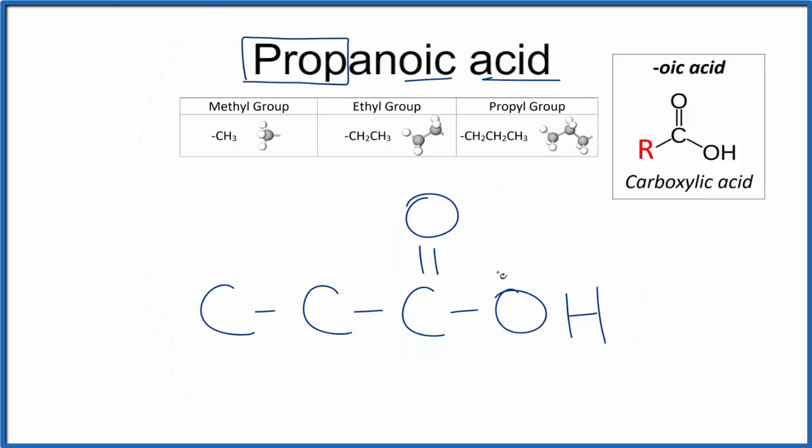Each carbon needs four bonds. We have one, two, three, four. For this carbon, this carbon has one, two. So let's put hydrogens on this. This carbon here has one bond, so let's put three hydrogens around it. So this is our structural formula for propanoic acid.